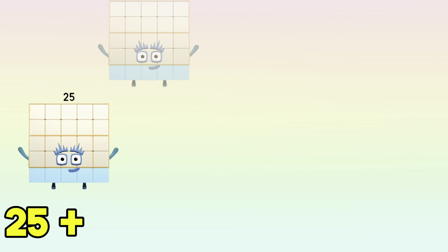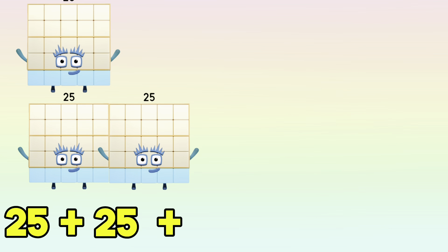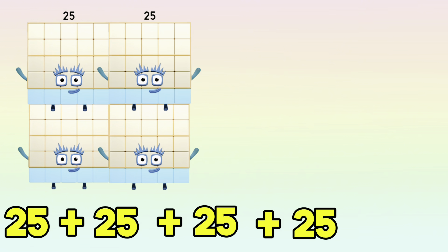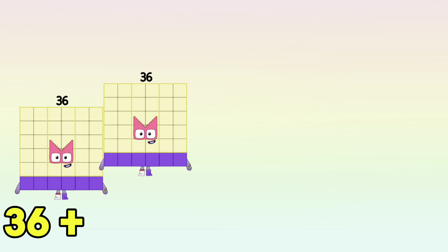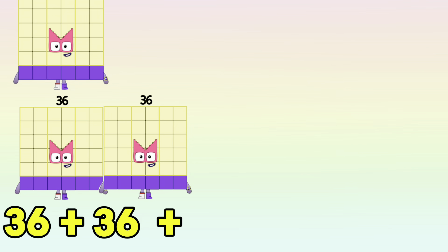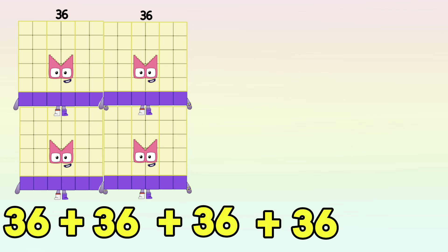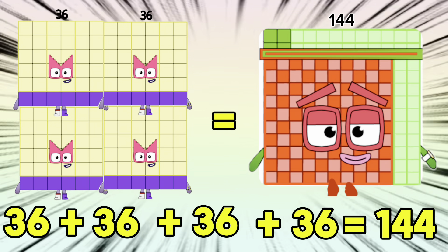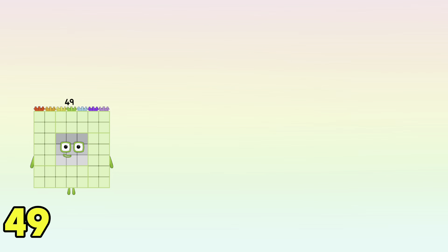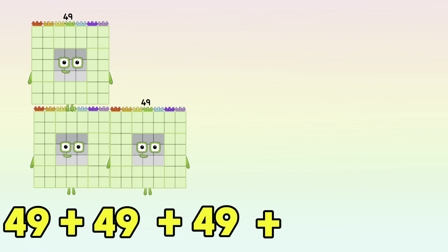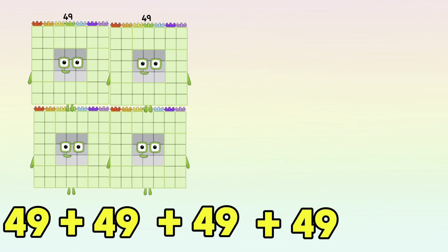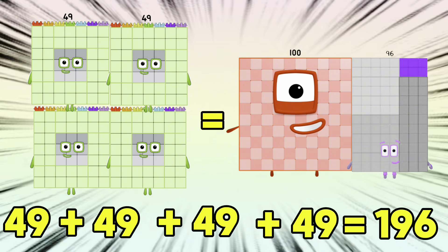25 plus 25 plus 25 plus 25 is equals to 100. 36 plus 36 plus 36 plus 36 is equals to 144. 49 plus 49 plus 49 plus 49 is equals to 196.